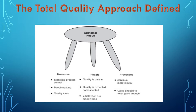In the same manner that we define quality, we also have to define the total quality approach. One of the easiest ways to define the quality approach is using this three-legged stool, where basically the center of everything is the customer. So the focus of everything that a company does has to be the customer. There are three components: measures, people, and processes. First, things have to be able to be measured, so statistical process control must be used, benchmarking must be used, and quality tools must be used in any company based on the total quality approach.